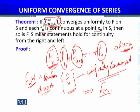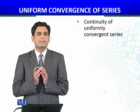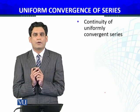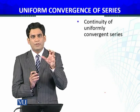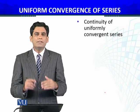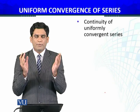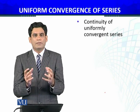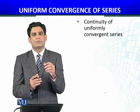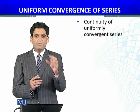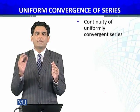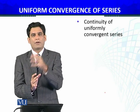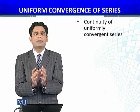Each term of the series is continuous at x equals x₀, so S_n(x) being the sum of continuous functions at x equals x₀ is also continuous. Now we can apply the result we proved for sequences of functions and conclude that f(x) is also continuous. So we have seen that if a series of functions is uniformly convergent and each function is continuous at a particular point x equals x₀, then the function to which the series converges is also continuous. This statement can be generalized over the entire domain S: if the series of functions is uniformly convergent and every function f_k, f_(k+1), and so on is continuous over the whole domain S, then the function to which the series converges is also continuous over the domain S.